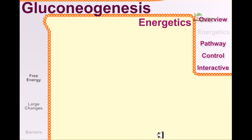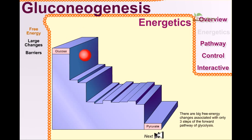In energetics, we'll discuss the free energy changes. There are big free energy changes associated with only three steps of glycolysis production. Here is the glucose and here is the pyruvate.